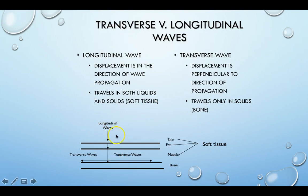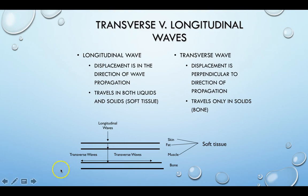Longitudinal waves transfer through solids and liquids as we go through soft tissue. But when that longitudinal wave hits something as solid as bone, something happens — the displacement changes from moving in the same direction as the wave propagation to a perpendicular direction. As the compressions and refractions get moved, the wave itself actually traverses along the bone. That's how it travels only in solids. It doesn't necessarily change our effect — it's just a different way that the wave travels.